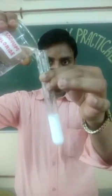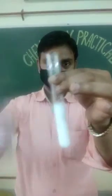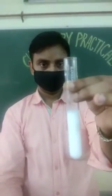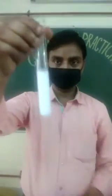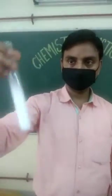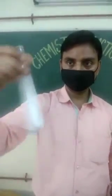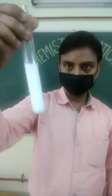When both are mixed, an exchange of ions takes place and a curdy white precipitate of silver chloride is formed. This reaction between sodium chloride and silver nitrate takes place only when both are present in the form of solution.